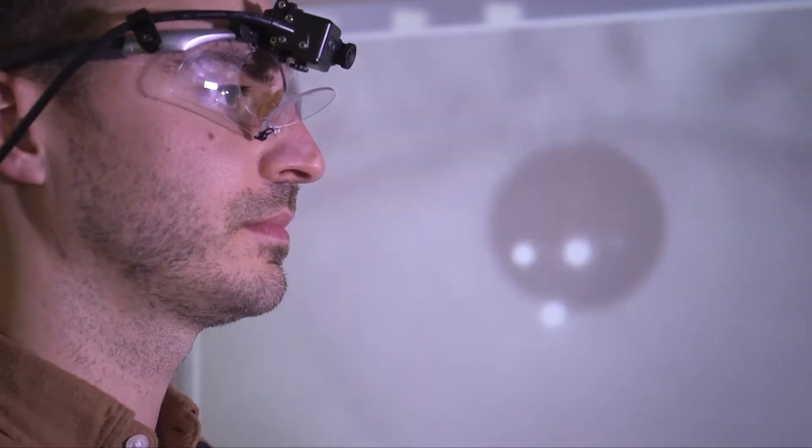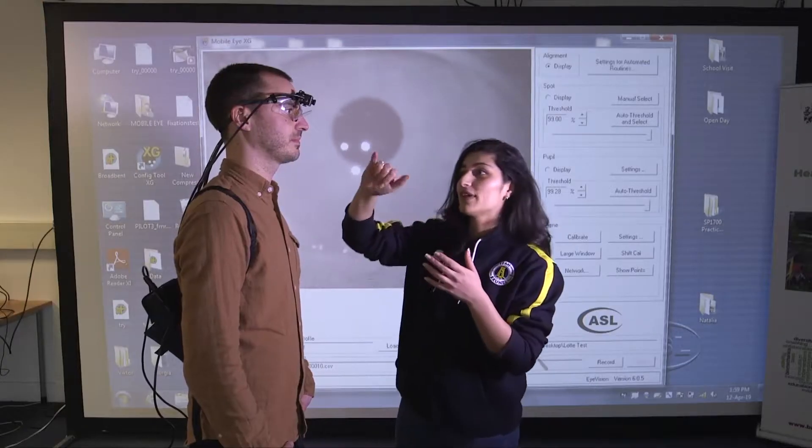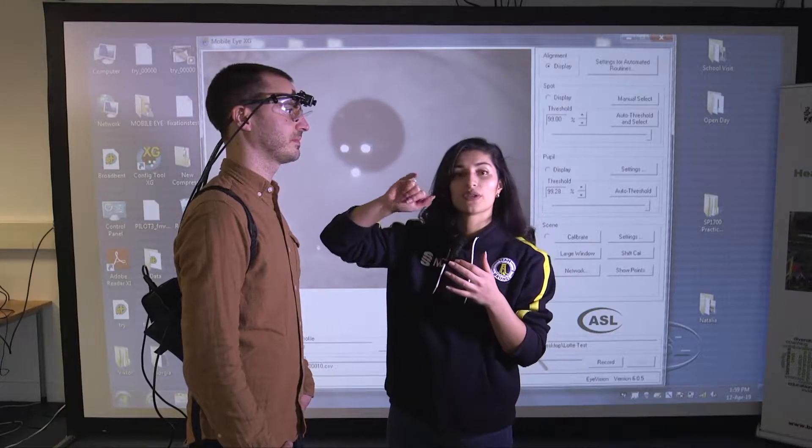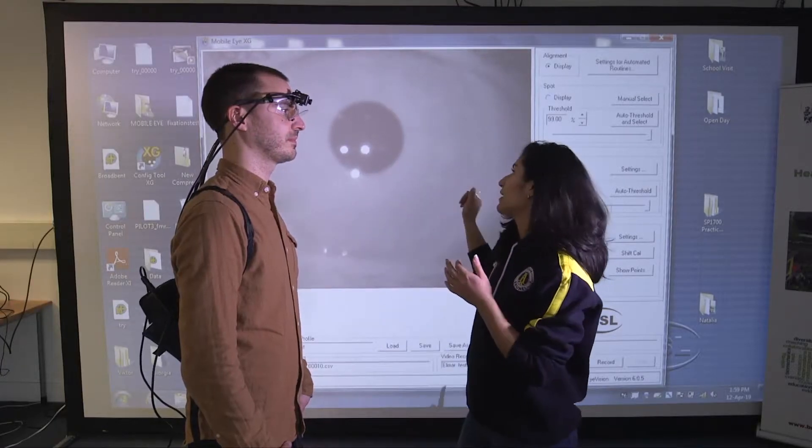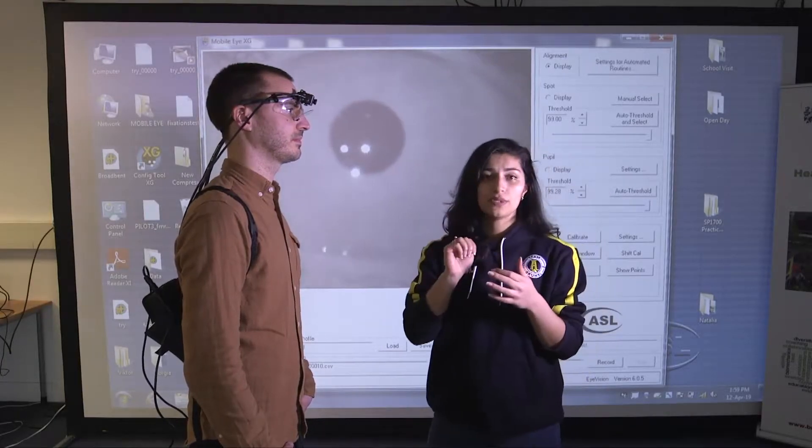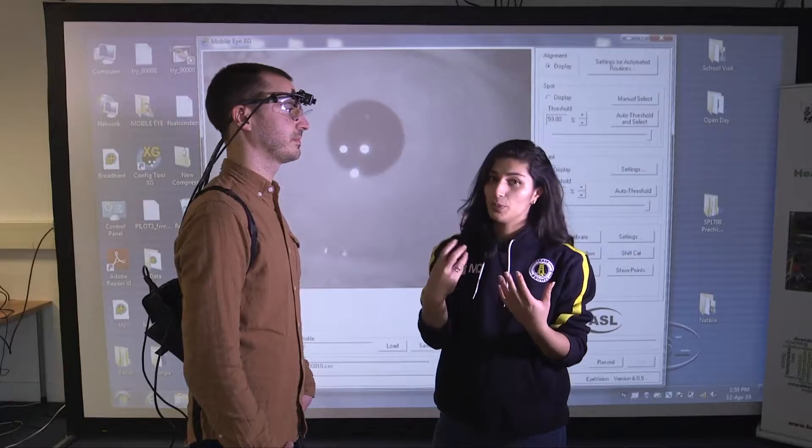We have one camera looking at the environment and we have another camera which is focused on the eye. As you can see in the background, we have three infrared beams which are focused on the pupil. This technology allows us to see what the athlete is looking at, which helps us in understanding their decision making.